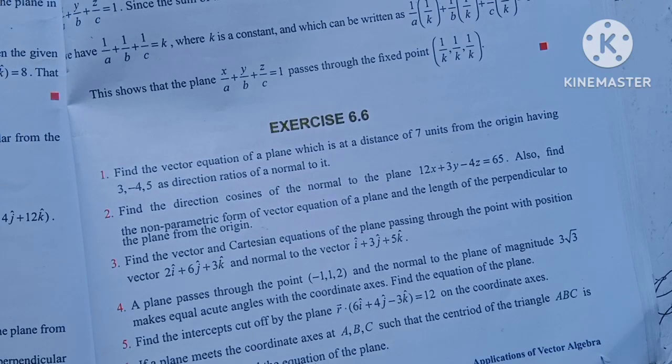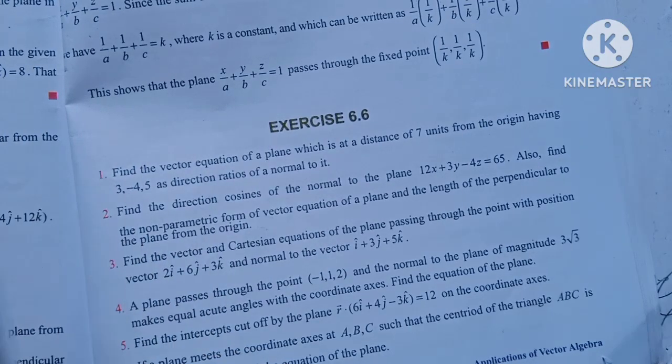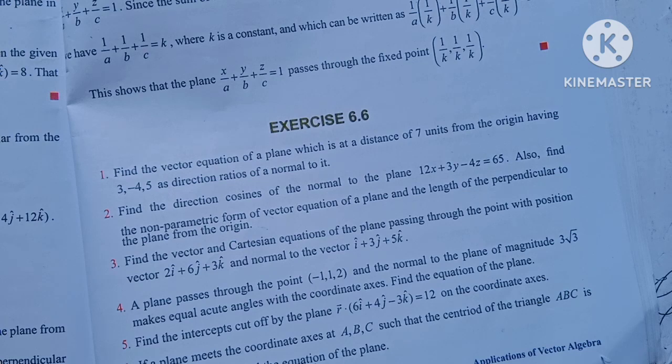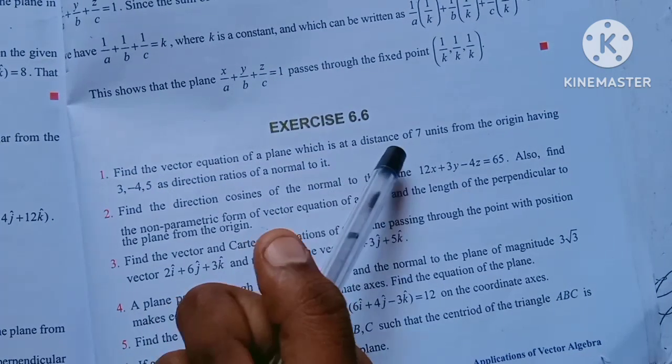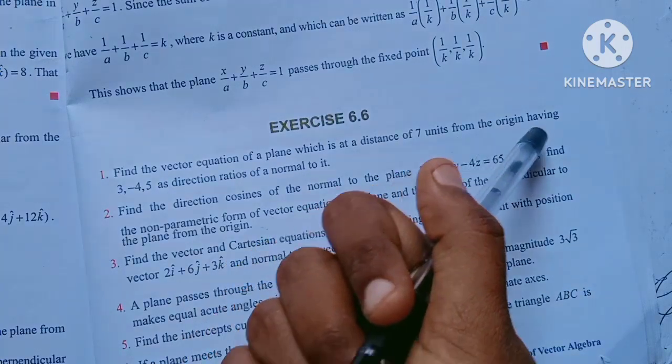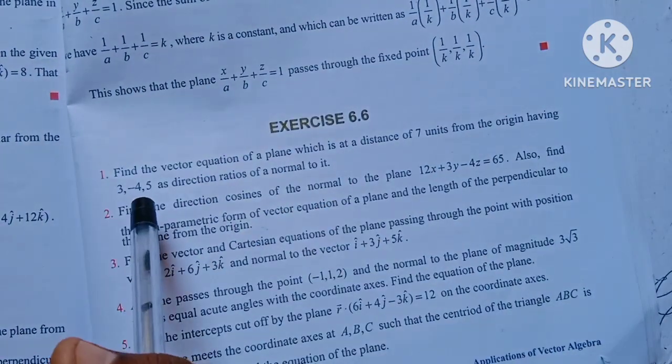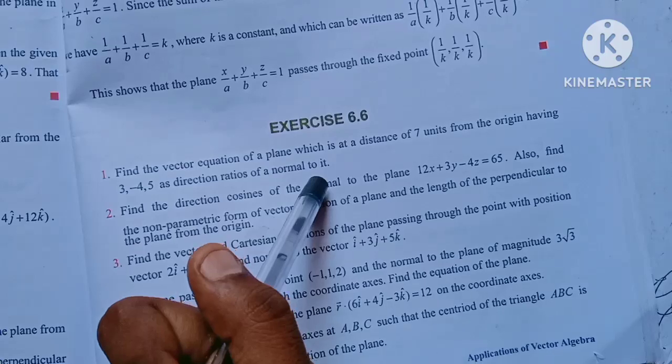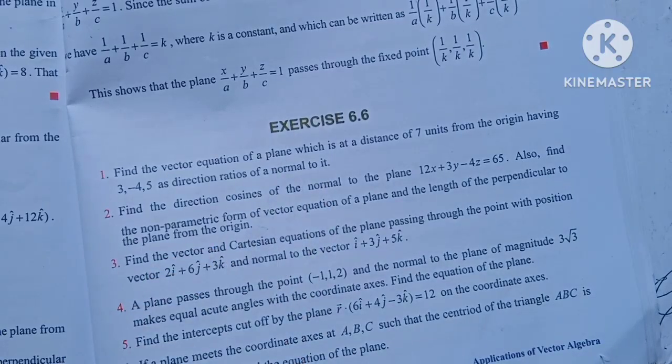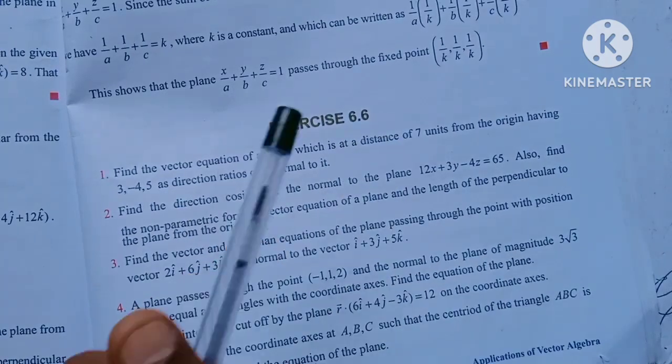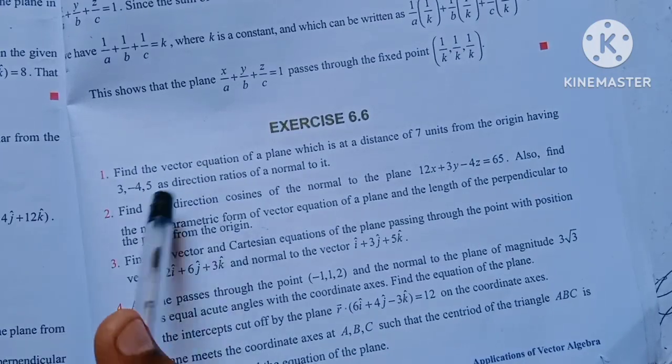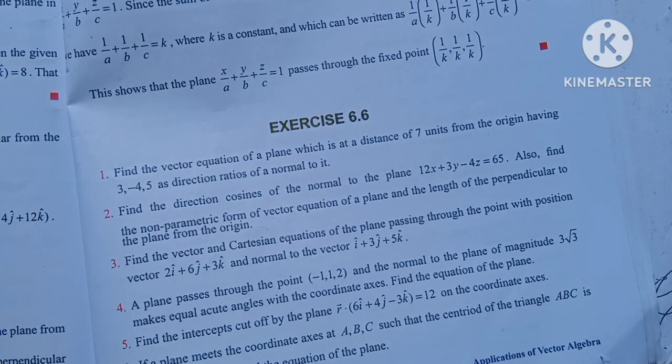Friends, I am Vino. 12th, Chapter 6, Exercise 6.6, first question: Find the vector equation of the plane which is at a distance of 7 units from the origin having 3, -4, 5 as direction ratios of a normal to it. We need to find the vector equation given the distance and direction ratios.